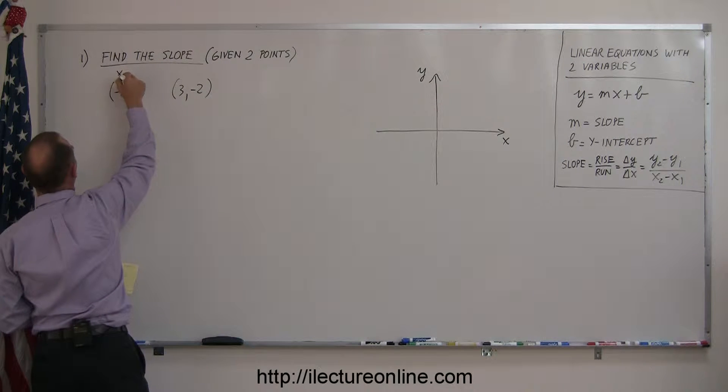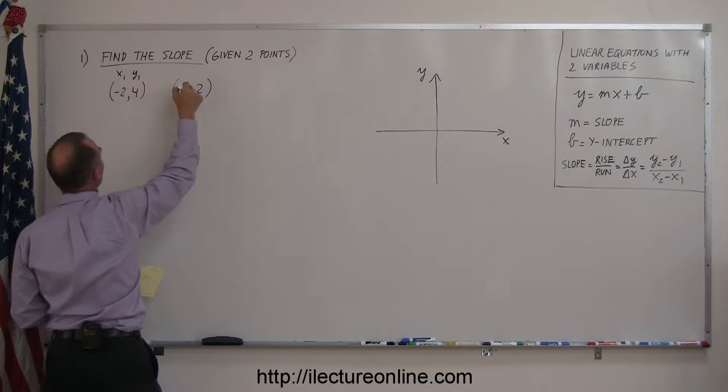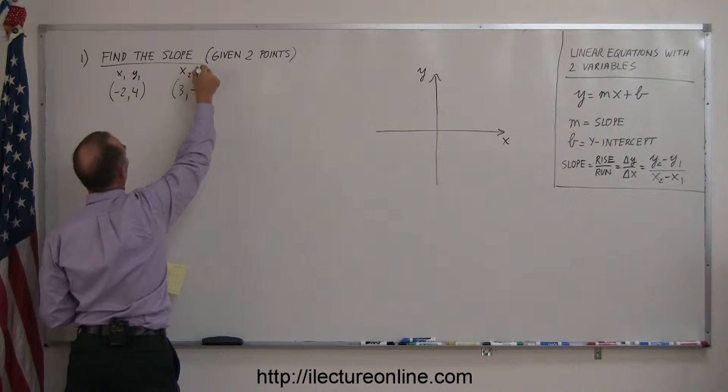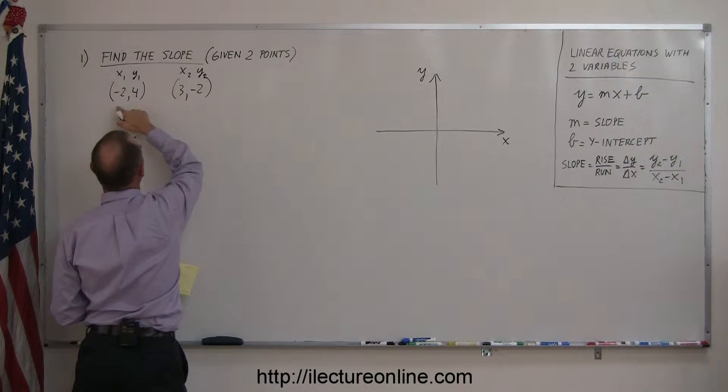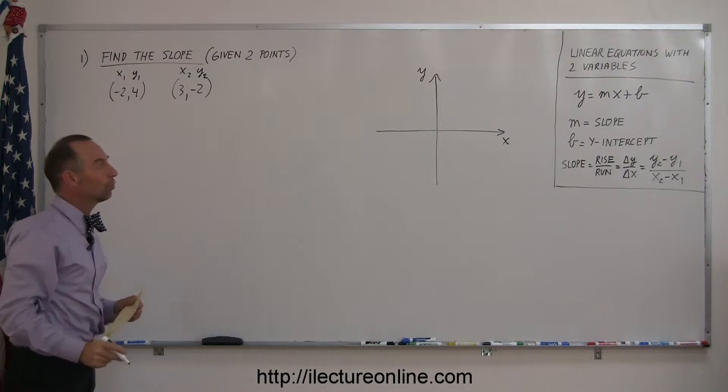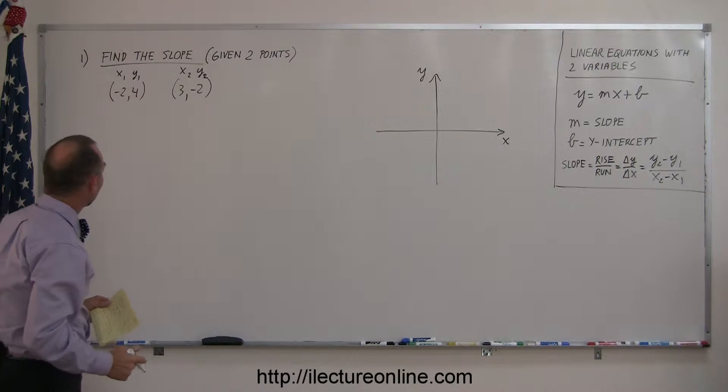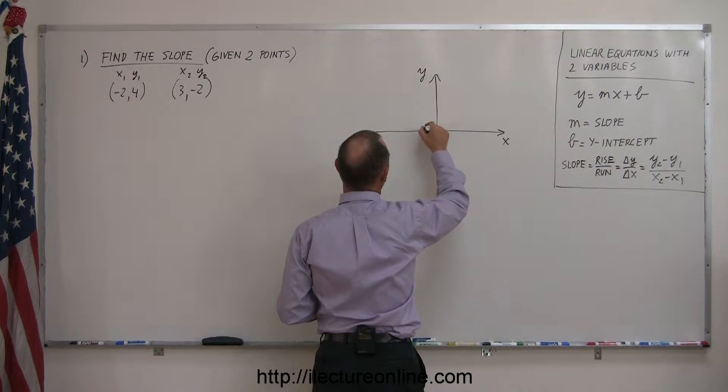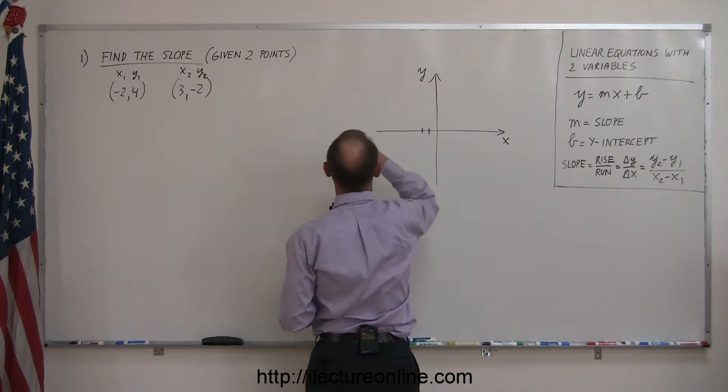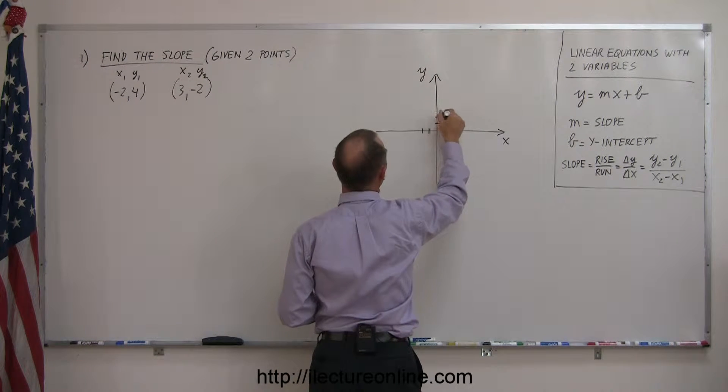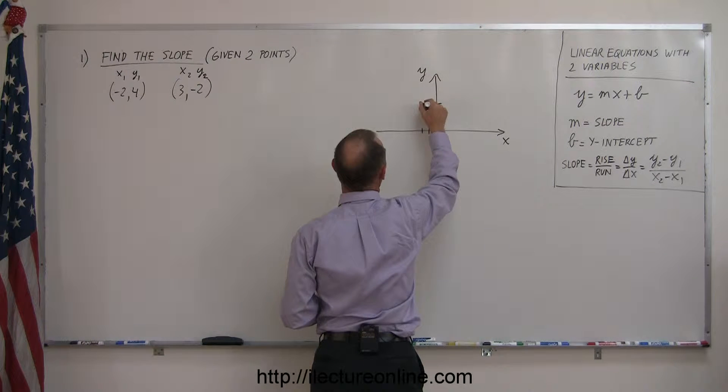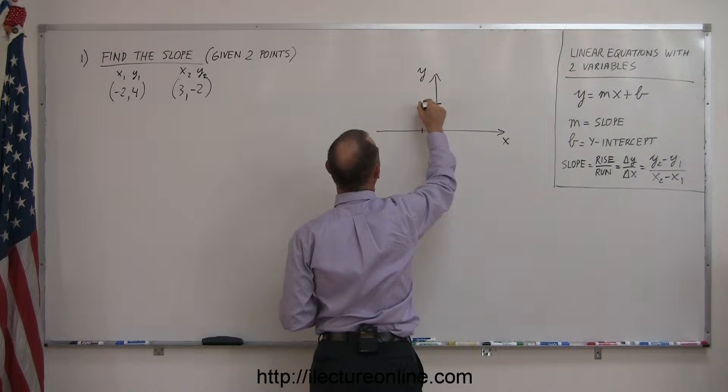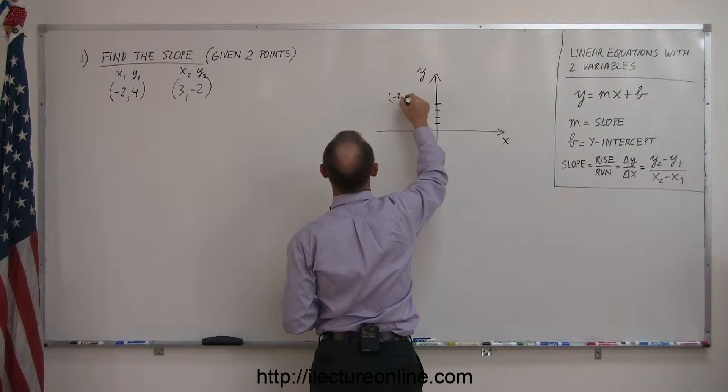So let's say this is the first point, x1 and y1. This is the second point, x2 and y2. So these are the x and y coordinates of each of the two points, x being negative 2, that's to the left, 1, 2, and y being 4, that goes up, 1, 2, 3, 4. So this point right here where those two lines meet is the point negative 2 comma 4.